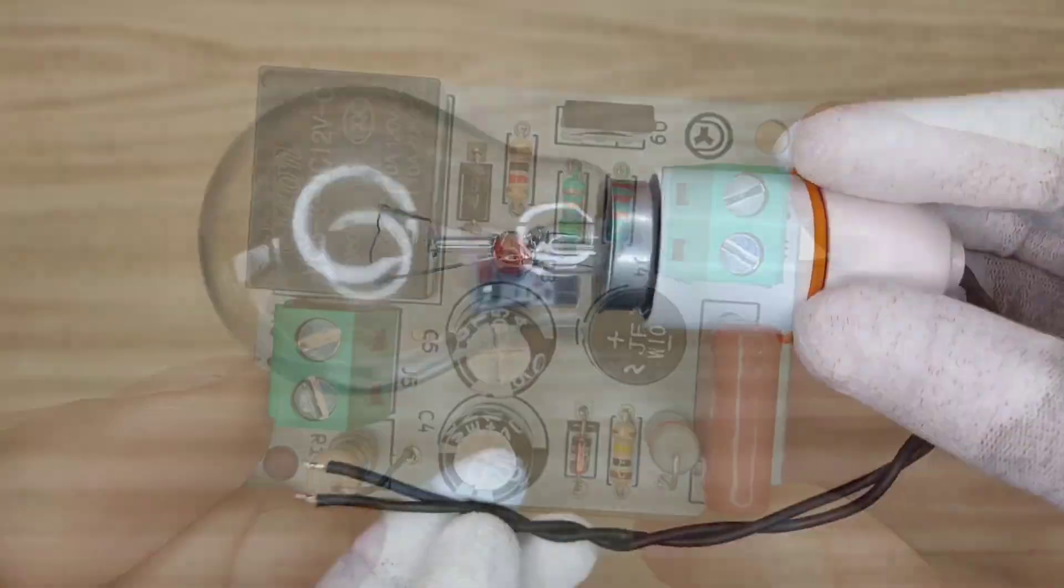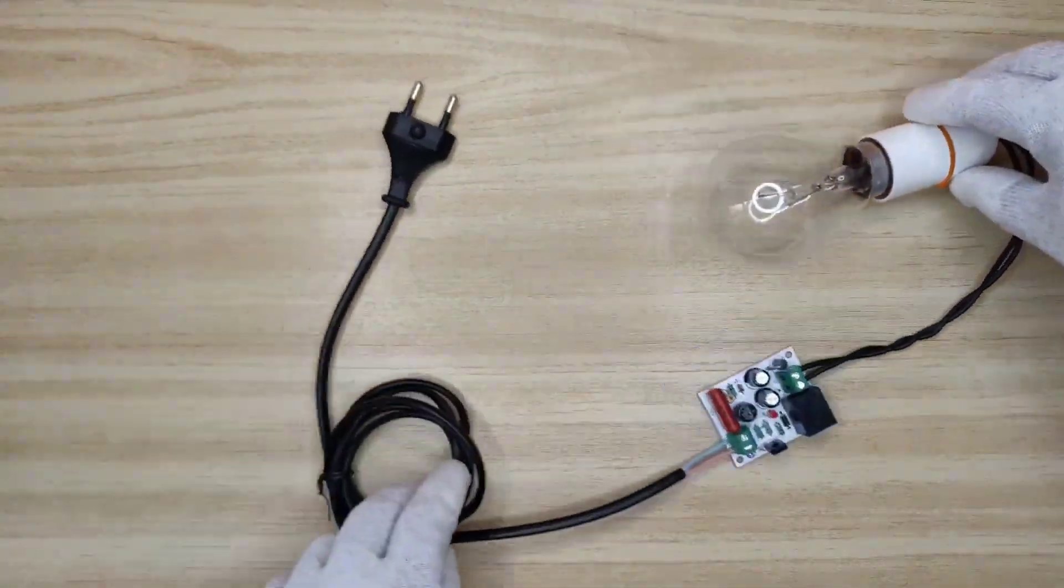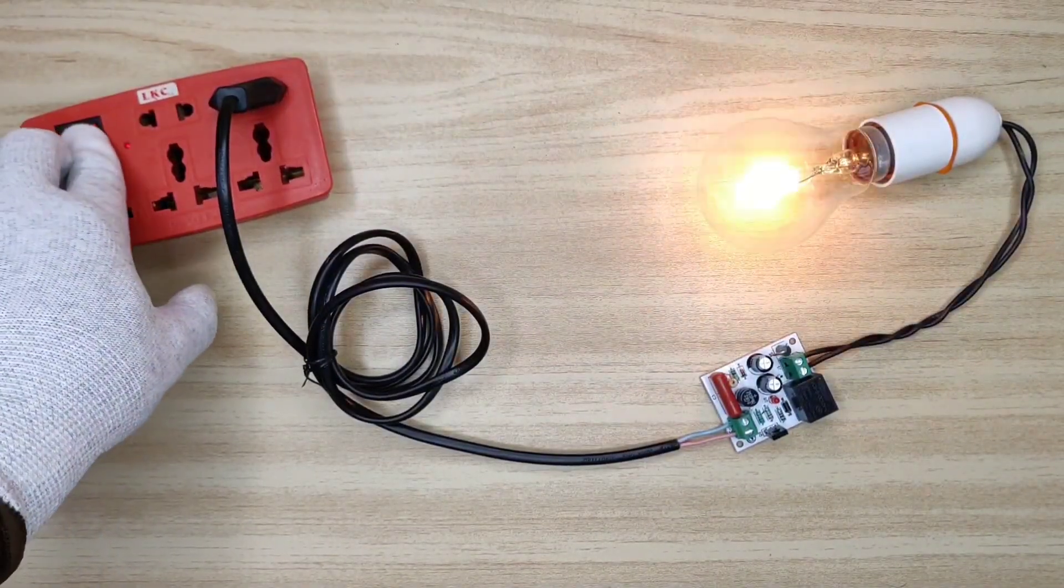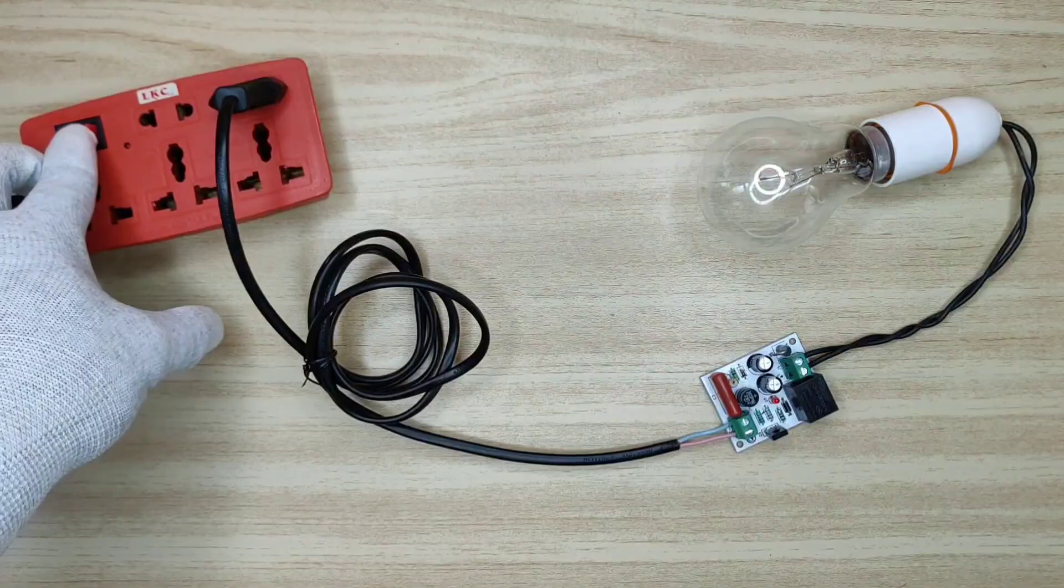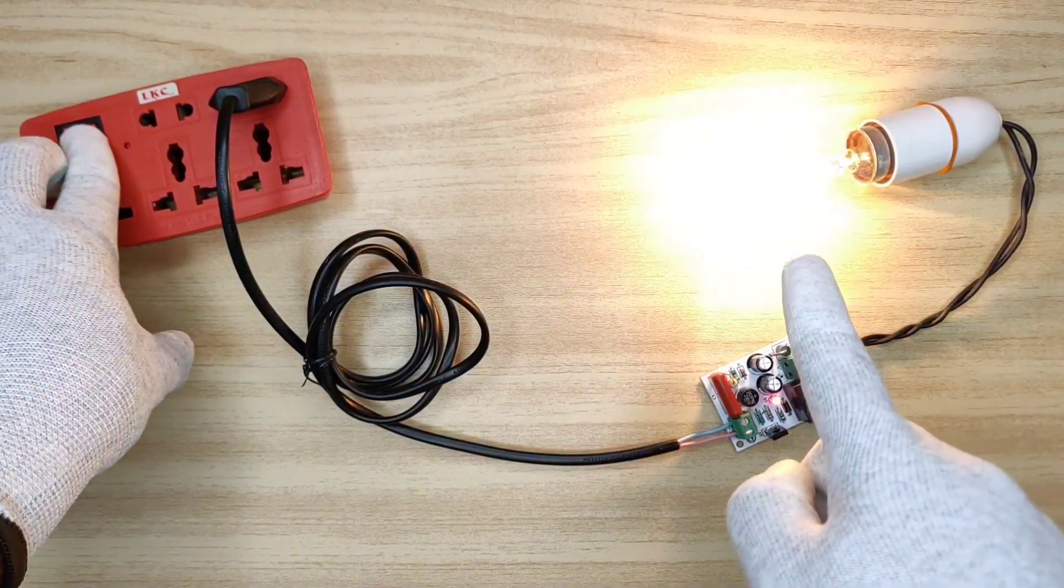Now I will use this bulb to show you how this circuit will work. As you can see, the bulb initially turns on at low brightness, then with a little delay, it switches to full brightness.